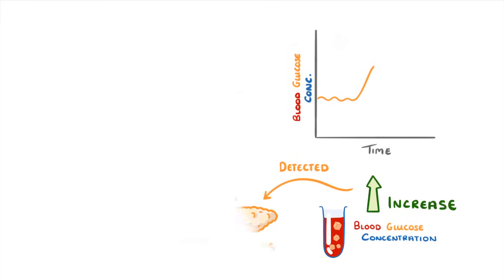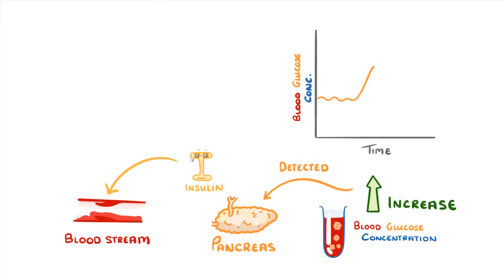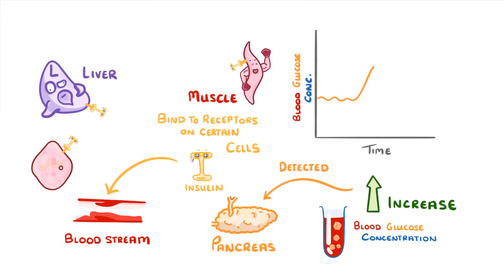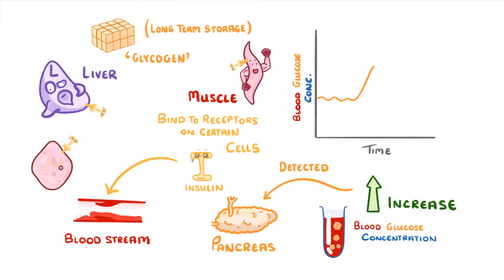This rise in glucose levels will be detected by your pancreas, which is an organ that sits just behind the stomach. And in response, it will release a hormone called insulin into your bloodstream. As it's travelling around the body, the insulin will bind to receptors on certain cells, which tells those cells to take in some of the glucose that's floating around in your blood. This happens in loads of different cells, but most important are liver and muscle cells. These two take up lots of the extra glucose molecules and combine them together to form glycogen, which is basically a long-term storage form of glucose. And so because all of this glucose is being removed from the blood, the blood glucose concentration is going to decrease.